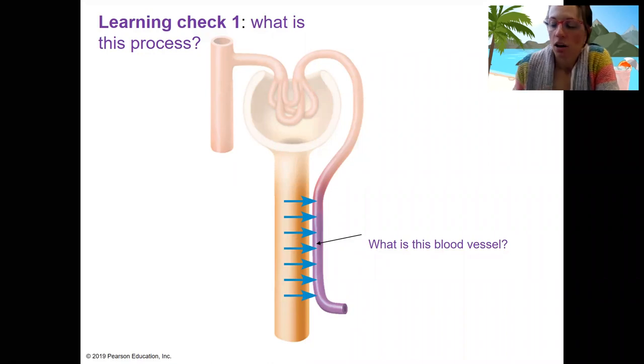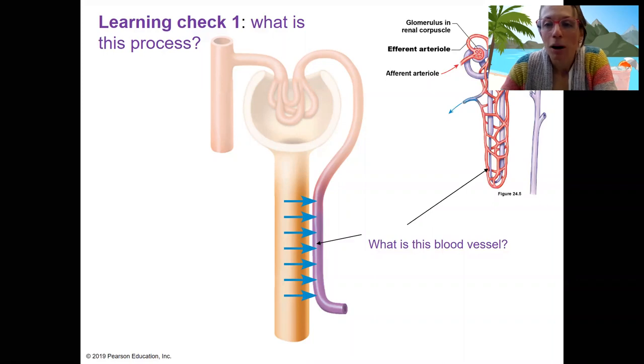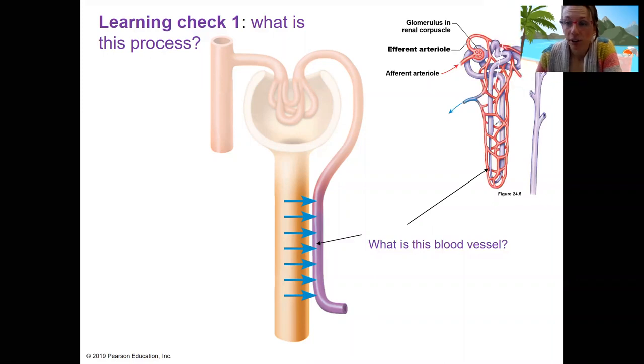We're going to start here with a learning check. So what is the process shown by these blue lines here? And then number two, what is the blood vessel depicted here? So for this second one, I'm going to show another image of it. There are two options actually for the name of the blood vessels,